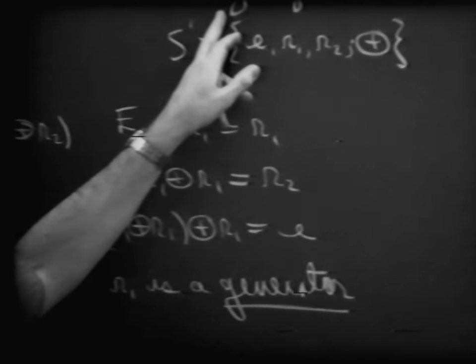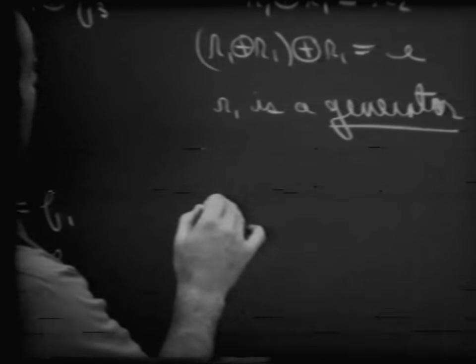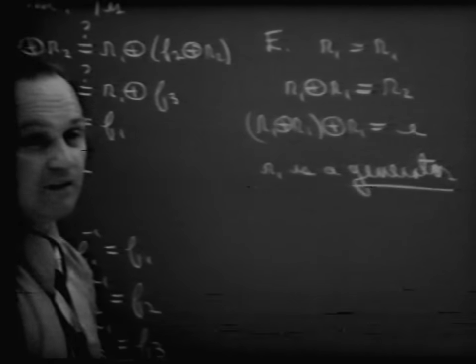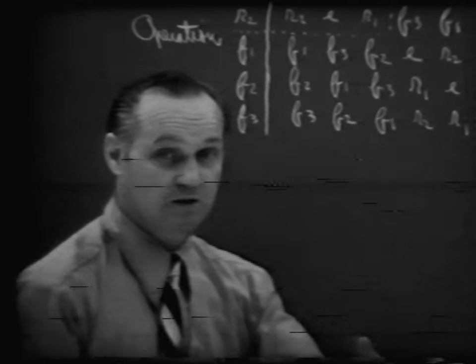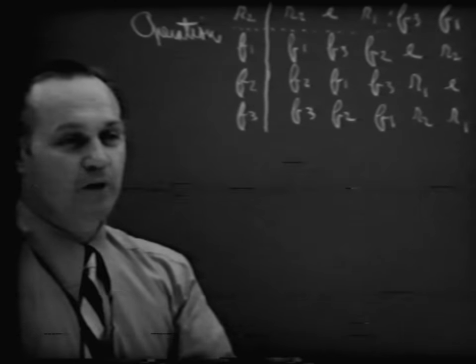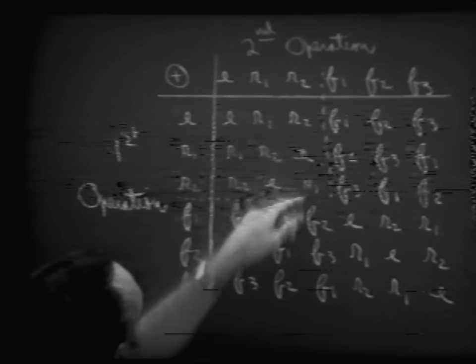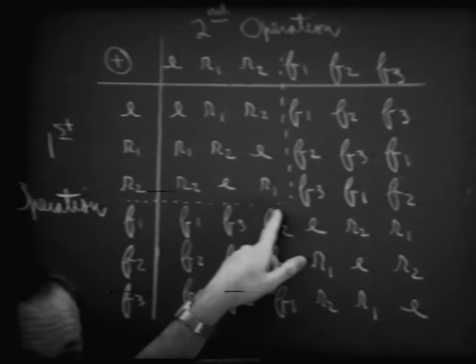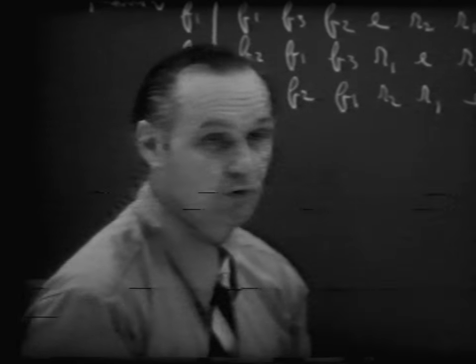Can we see any other patterns? The subgroup is going to be commutative. Remember, we didn't have commutativity as one of the required properties of a group. When we have commutativity, we call it a special group — an abelian group, named after a man, if it is commutative. Looking at our table, the mere fact that the elements are symmetric with respect to the diagonal indicates that it is commutative. So certainly this little subgroup is a commutative — abelian — group.